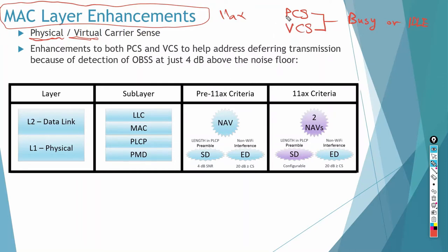Now, the physical carrier sense is performed at layer 1 or the PHY layer. The virtual carrier sense is performed in layer 2 or the MAC sublayer of the data link layer. Now, these two methods, regardless of the fact that each one operates in a separate layer or sublayer, both of them actually report to the MAC layer.